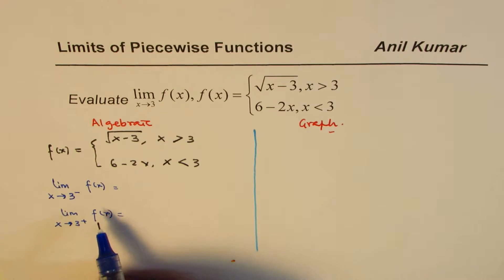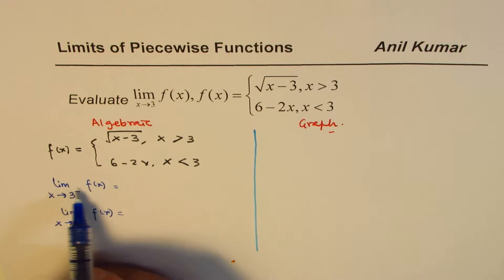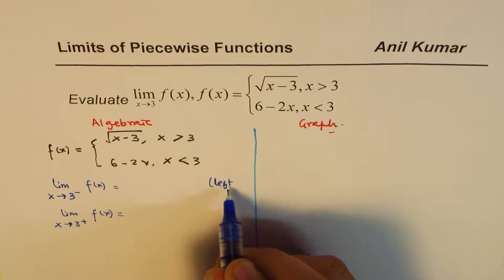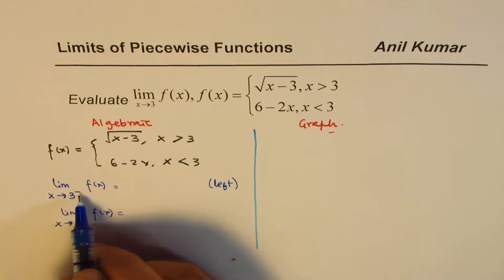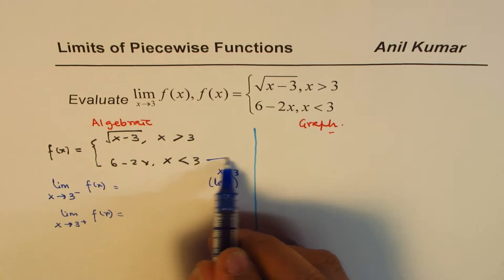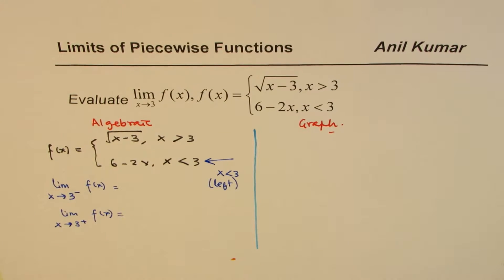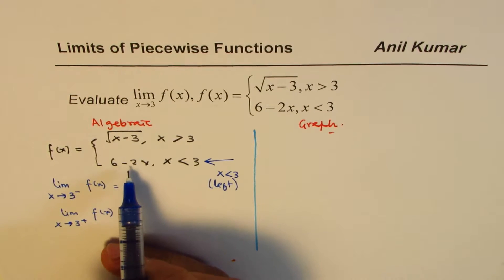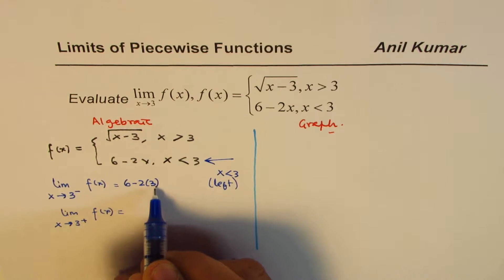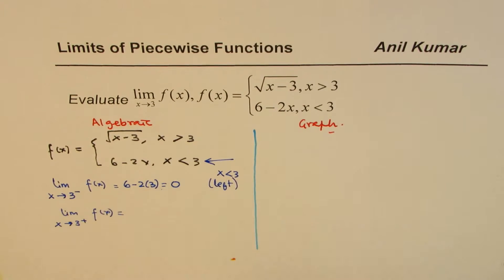So when I say limit when x approaches 3 from the left side, this is left side, that means x is less than 3. x is less than 3 means we are working on this branch. So I'll substitute 3 in this equation. So I'll get 6 minus 2 times 3, which is 0. So this limit is 0.